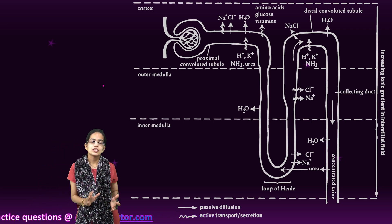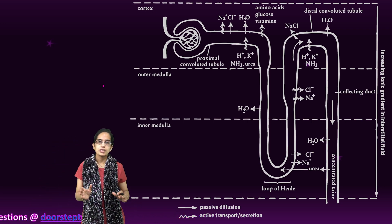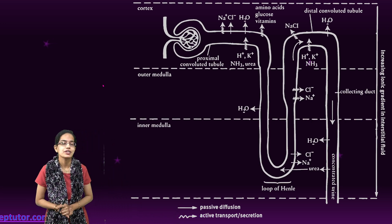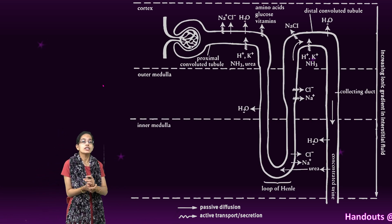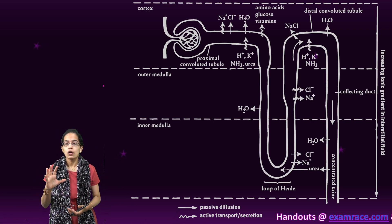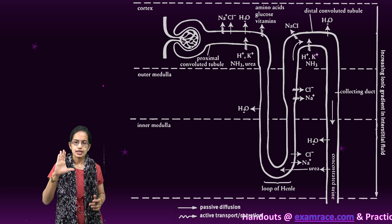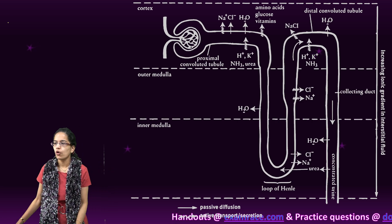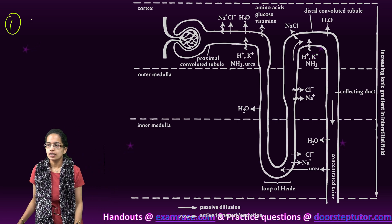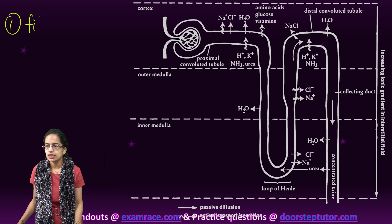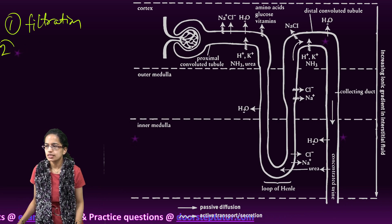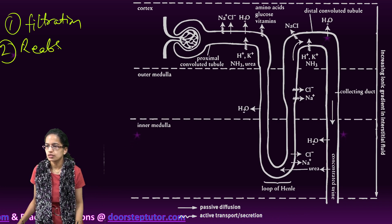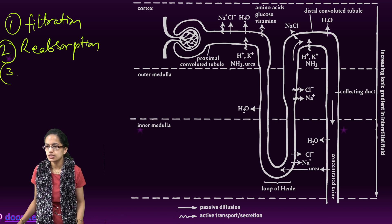Let's understand the process of urine formation and concentration of filtrate, which is one of the most essential parts of the nephrons. Understanding the formation of urine: urine formation occurs through three stages. First is filtration, the second is reabsorption, and the third important stage is secretion.